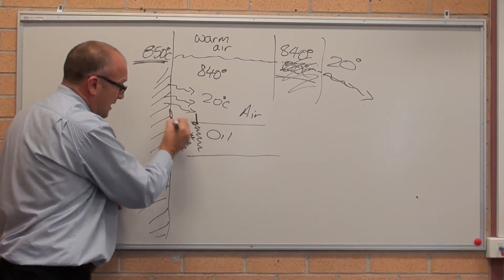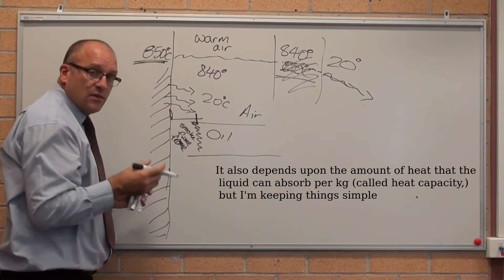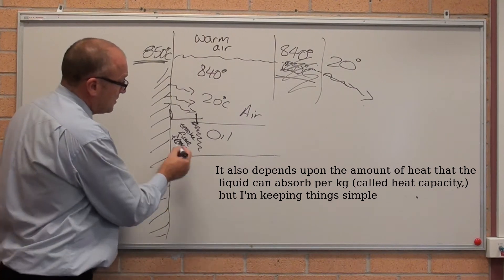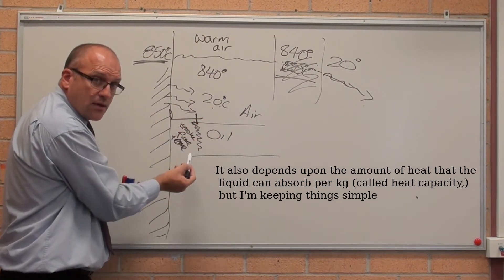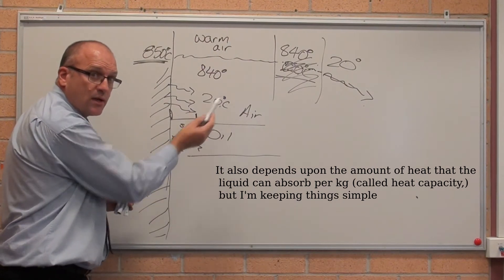The thicker the gaseous layer, the slower it takes to cool. So that is going to be a lot quicker than air, because air's got a lot bigger gaseous layer than oil. So oil cooling is quicker than air quenching.